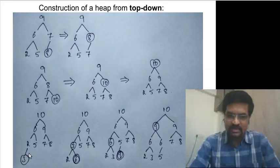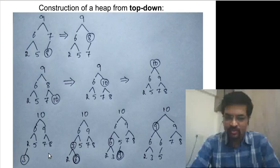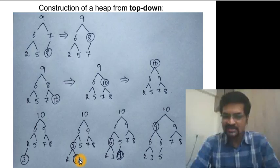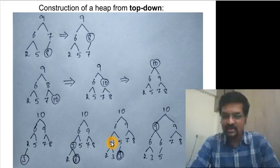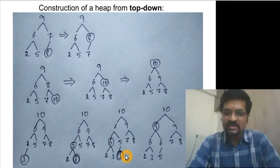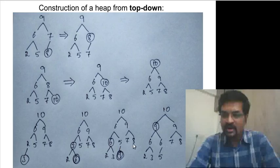Key 3 is inserted: 3 is greater than 2, so 2 is pulled down and 3 goes up. Key 6 is inserted: 6 is greater than 3, so 3 is pulled down and 6 goes up — it equals the other 6, so no further swap needed. Key 9 is inserted: 9 is greater than 5, pulling 5 down; 9 is also greater than 6, pulling 6 down.